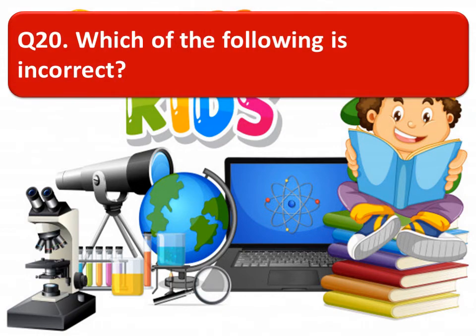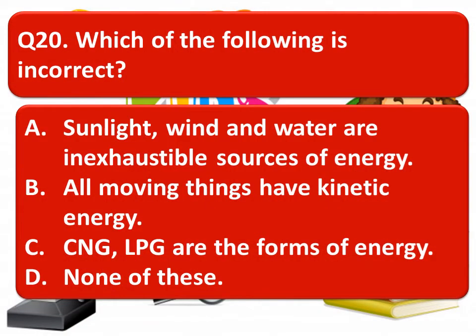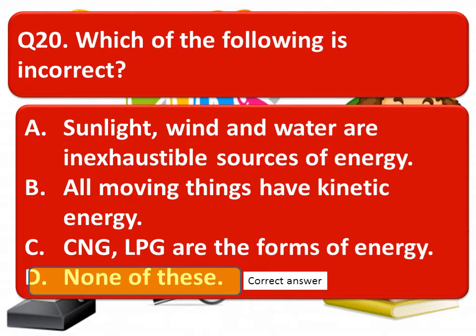Which of the following is incorrect? Option A: sunlight, wind and water are inexhaustible sources of energy. Option B: all moving things have kinetic energy. Option C: CNG and LPG are forms of energy. Option D: none of these. The correct answer is Option D — none of these, meaning all the statements are correct.